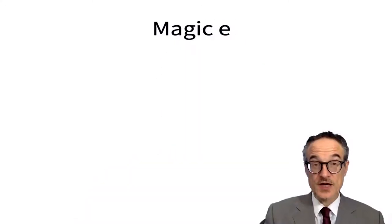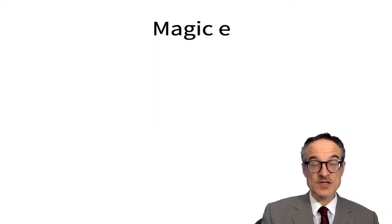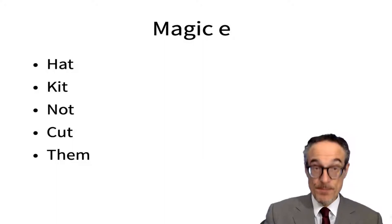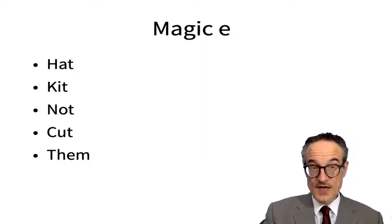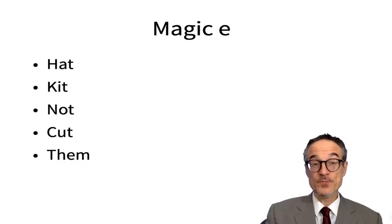Now you may know about the magic E — you may have heard of it. Let me just explain. So let's start with just four simple words: hat, kit, knot, cut, and them. And if we take these words and put an E on the end, what happens to them? Well, hat becomes hate.